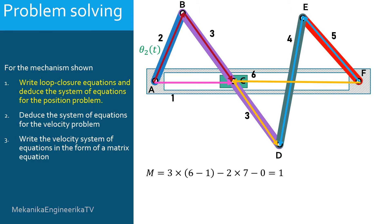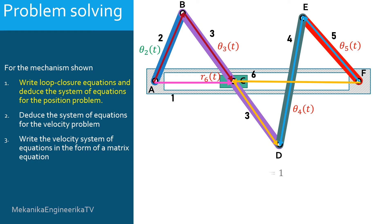Therefore, the position problem involves 4 unknowns: theta 3, the angle of the bar BD; theta 4, the angle of the bar DE; theta 5, the angle of the bar EF; and R6, the linear position of the slider C. In order to express the 4 unknowns in terms of the given angle theta 2, 2 loop vector equations are required.